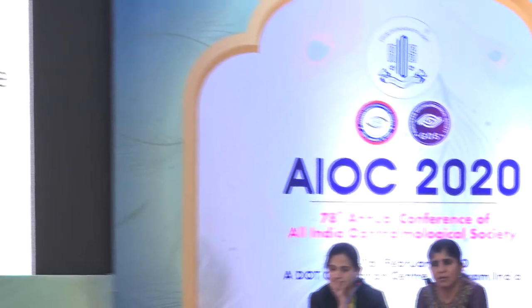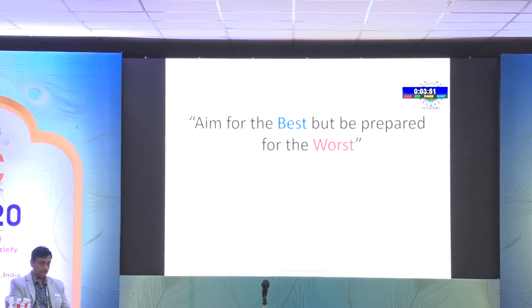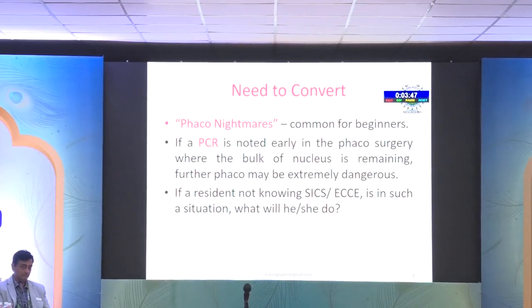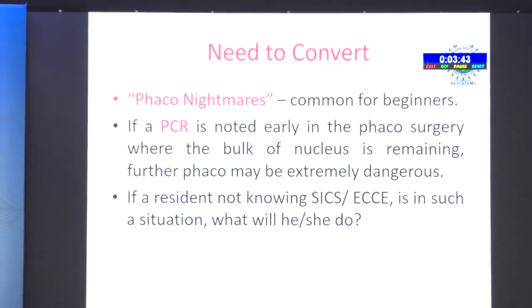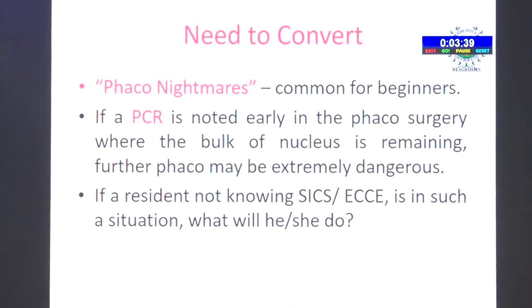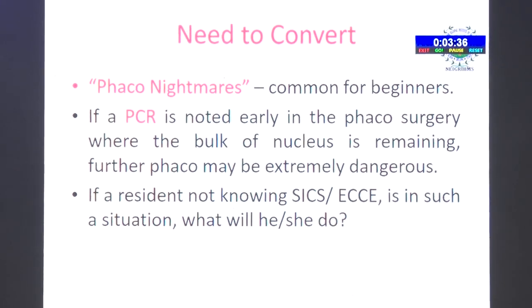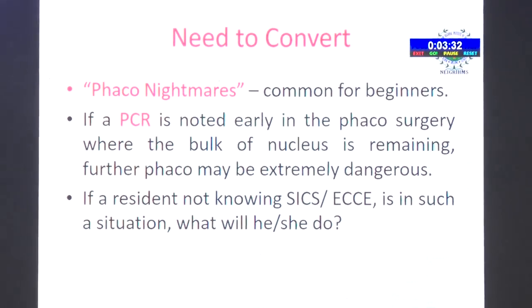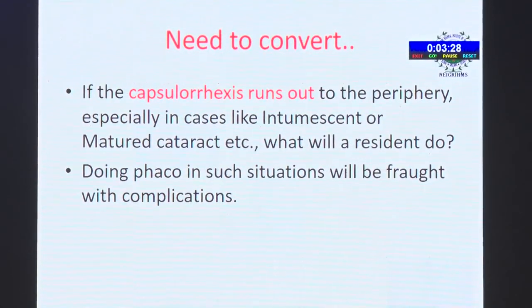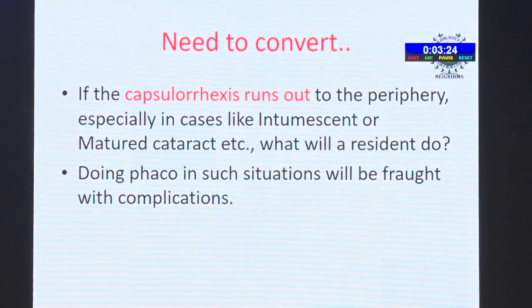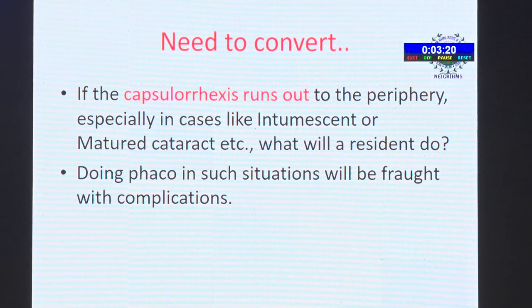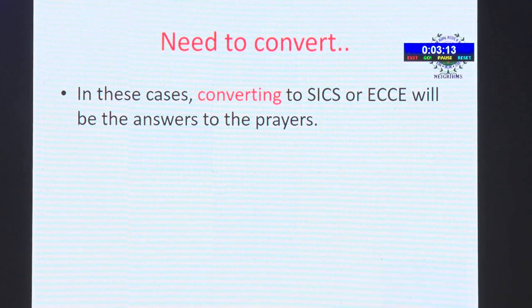I disagree that there is no need to teach ECC and SACS to residents because it's not performed in practice. We should aim for the best but be prepared for the worst. FACO nightmares are much more common for beginners. If a PCR is noted early in FACO surgery where the bulk of nucleus remains, further FACO may be extremely dangerous. A resident not knowing ECC or SACS - what will they do? If the capsulorhexis runs to the periphery, especially in intumescent cataract, FACO in such situations will be fraught with complications. Converting to SACS or ECC will be the answer.